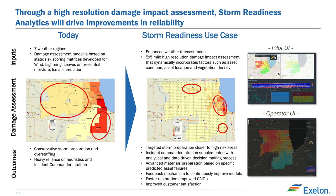The key to this use case is that we can do a better job with the weather: we can target damage clearly if this works, and then we can put our crews in the right places rather than guessing where they should be. This obviously has a big impact on SAIDI because you'd be better prepared. So this is a very fascinating use case. We'll show some screenshots and do that demo.